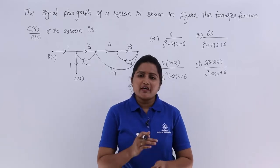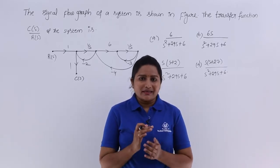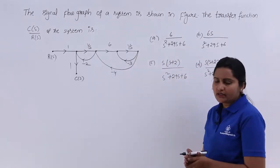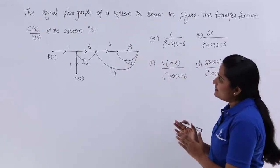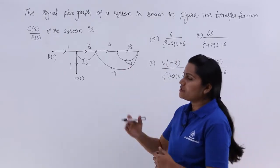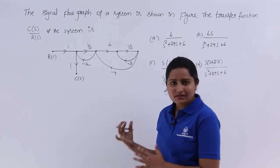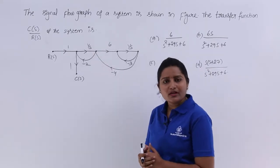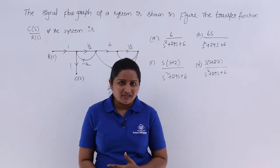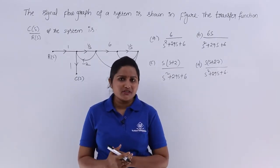In this video we are going to discuss a previous GATE problem related to signal flow graph. The signal flow graph of a system is shown in the figure. The transfer function C(s) divided by R(s) of the system is to be determined. Given the signal flow graph, we need to derive the transfer function or total gain of the system.